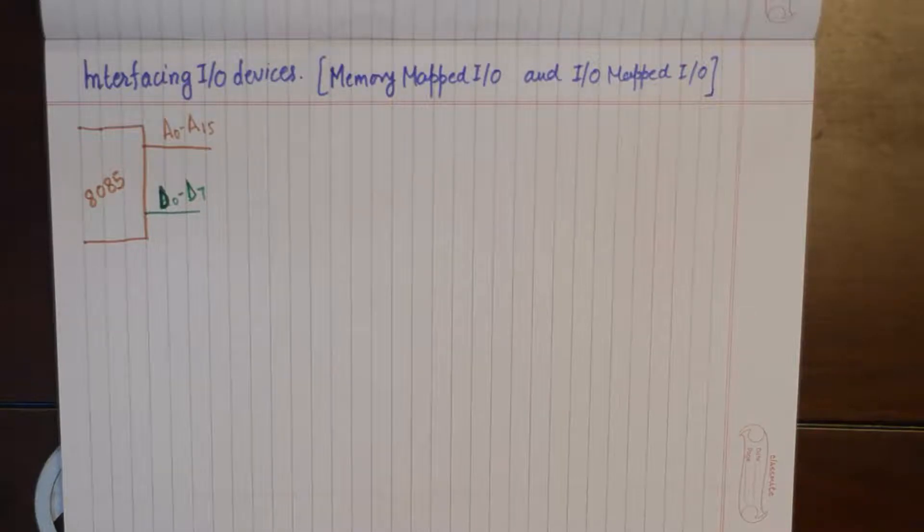Now microprocessors are also interfaced with input output devices. Or in other words, microprocessors are just interfaced with two things: either memory or I/O devices.